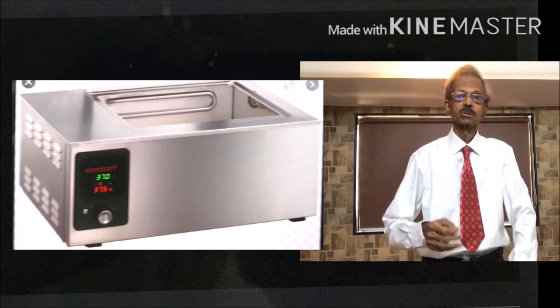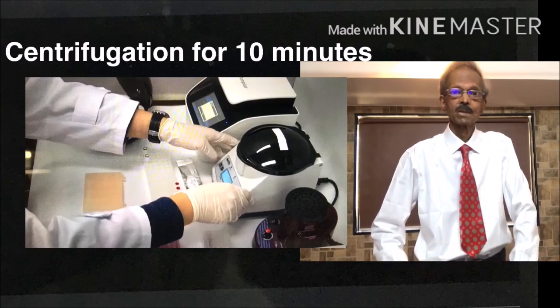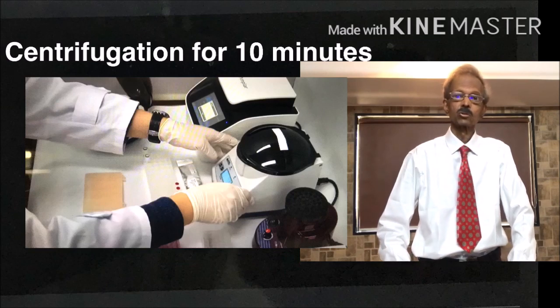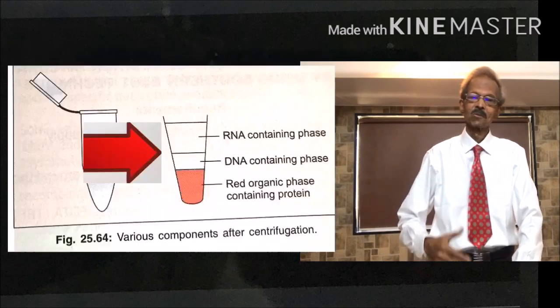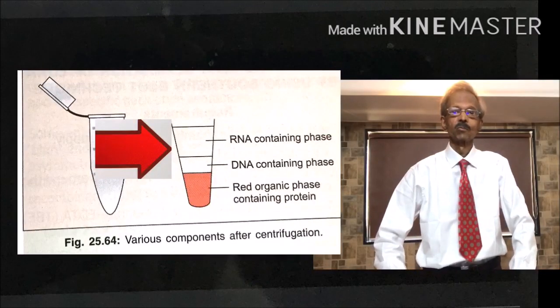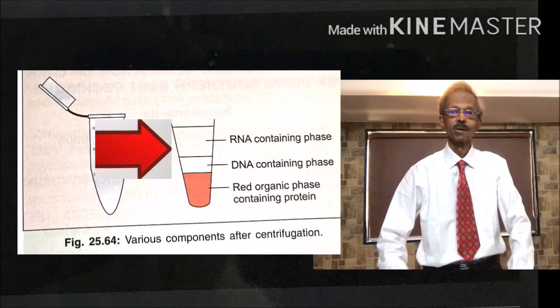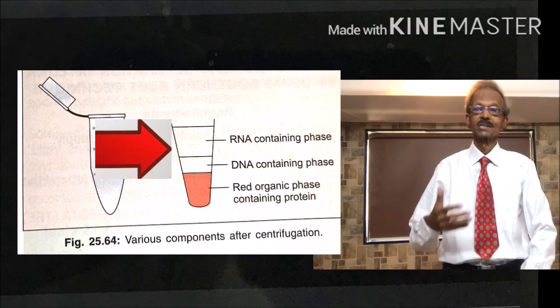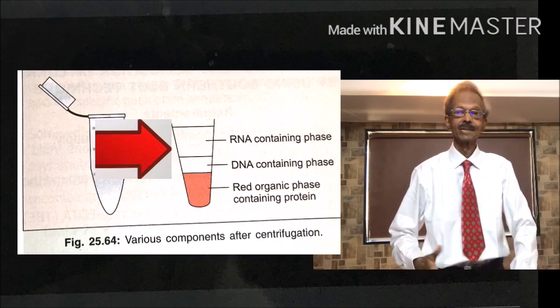Next, the ependorf is then centrifuged at 12,000 G and 4 degrees centigrade temperature for 10 minutes. And in the tube, then at the end of the centrifugation, 3 layers are formed. From these, the upper two layers contain RNAs and DNAs if present in the patient's specimen. Refer to the figure on the left hand side.